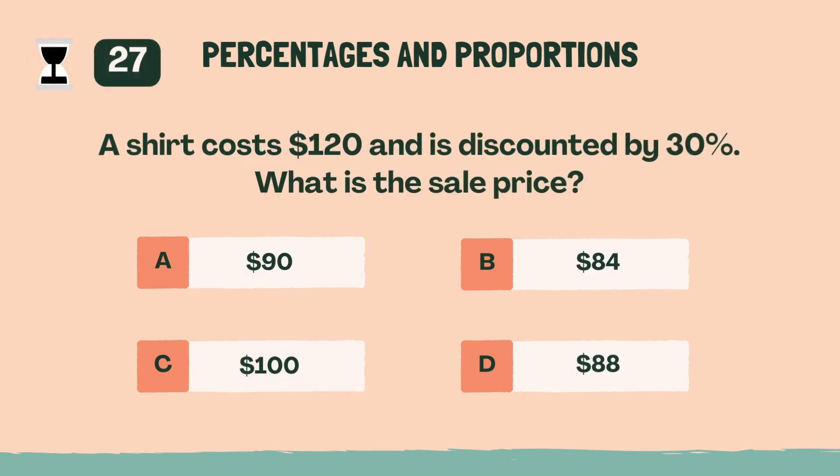A shirt costs $120 and is discounted by 30%. What is the sale price? B, $84.